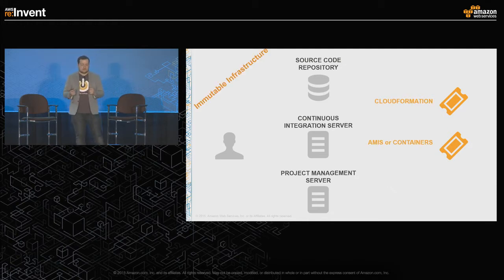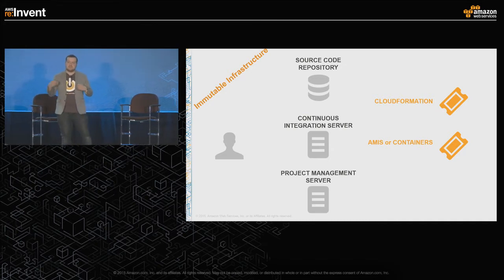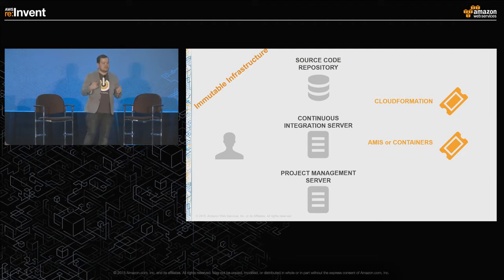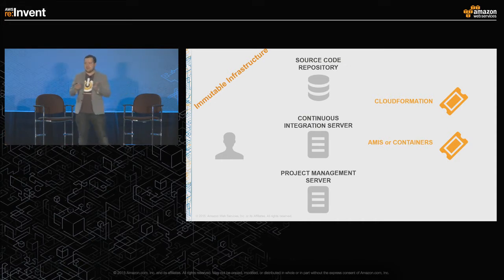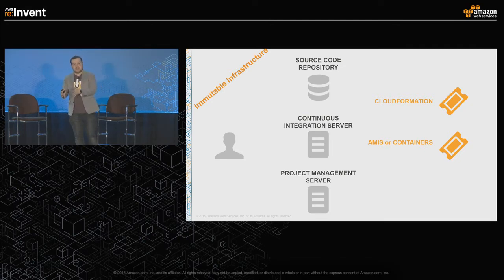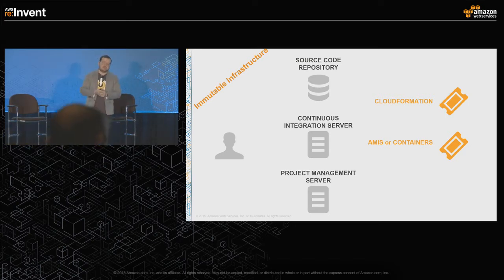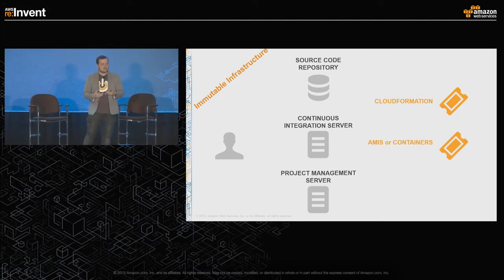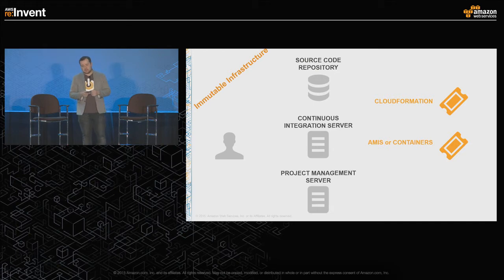Something I've seen increasingly among customers is immutable infrastructure. Instead of deploying to the same set of instances all the time, you build Amazon Machine Images, Docker containers, or CloudFormation templates — treating your infrastructure as code and spinning up a whole new CloudFormation stack with every major deployment. What's already deployed never gets touched. It just lives there. At the next deployment, you bring up something new. The benefits include easy rollbacks by redirecting to old infrastructure, better security since login can be disabled, and if something gets compromised, it won't live long.